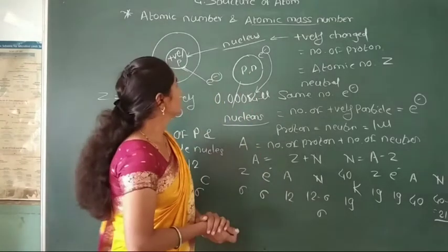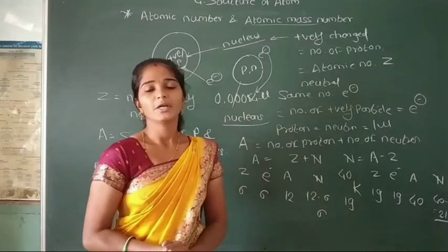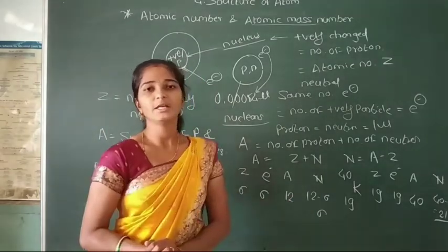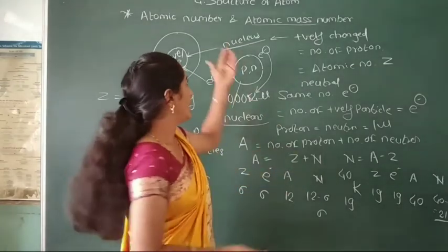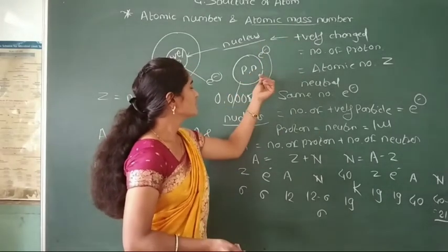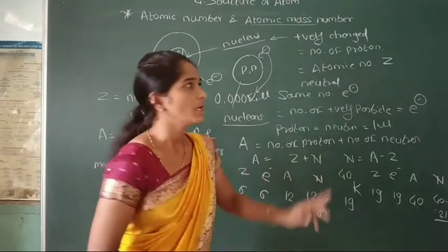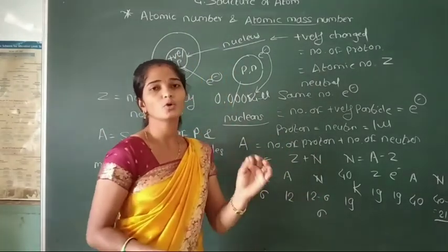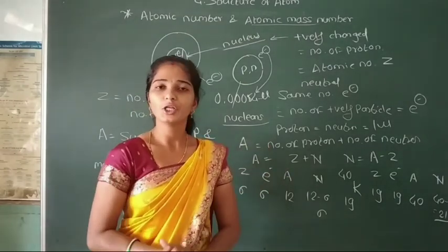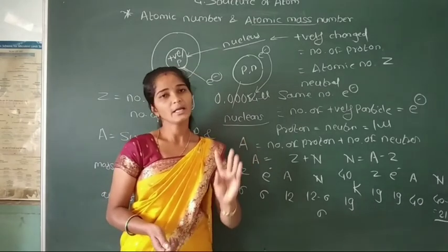So here we discussed atomic number and atomic mass number, with examples. The atomic mass number is calculated by the number of protons and neutrons, and the atomic number is calculated by the number of positively charged particles. In the next lecture, we will study what is meant by isotopes, isobars, and isotones.